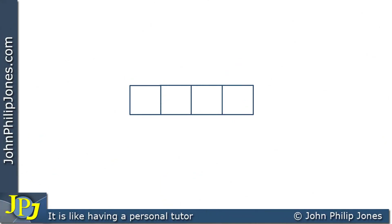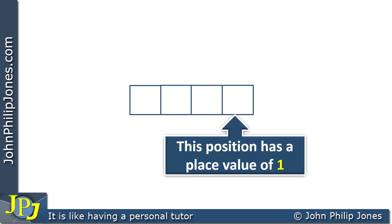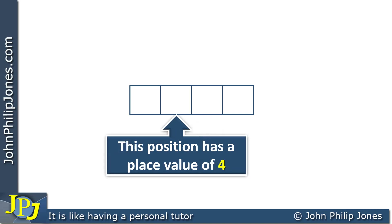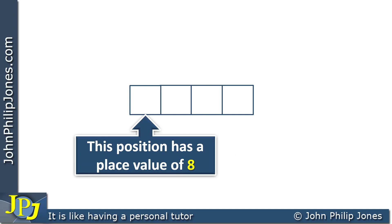Consider four flip-flops grouped together, capable of storing a nibble. This position here has a place value of one, so if a one appeared in there it would have the value of one. If zero appeared, it would have no value. Moving on, the next position has a place value of two, the next has four, and the last has a place value of eight, so a one there would give the value of eight.